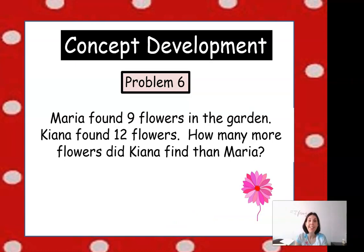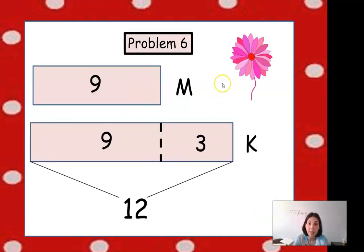Maria found 9 flowers in the garden. Kiana found 12 flowers. How many more flowers did Kiana find than Maria? So we want to think about how we can use this to make a tape diagram. Remember to make sure you label Maria and Kiana, so an M and a K. So here's Maria with the M. You want to label your tape diagram. And she picked 9—was it flowers? Yeah. She found 9 flowers in the garden. So Maria found 9 flowers.